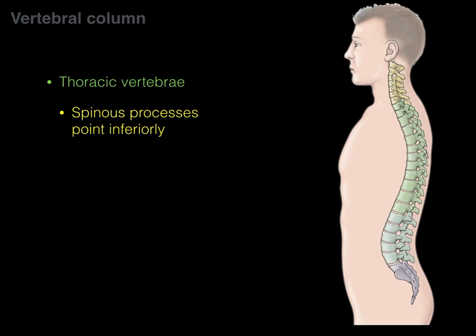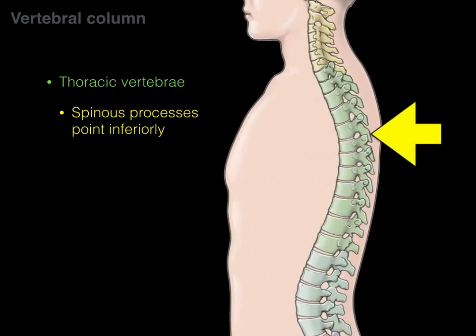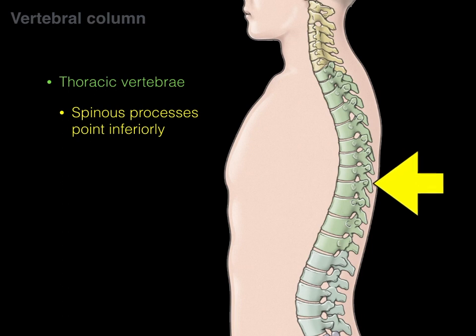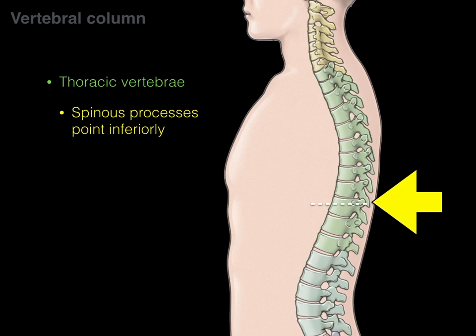The thoracic vertebrae have spinous processes that are pointing inferiorly, which makes them quite unique. The spinous process of one thoracic vertebra is oriented at the level of the inferior thoracic vertebral body. For example, the spinous process of T9 is at the level of the vertebral body of T10.